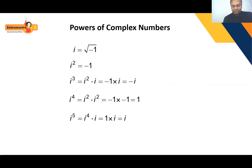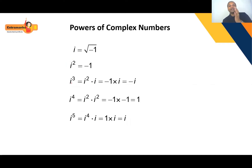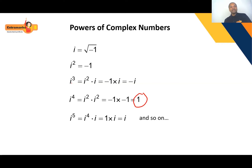Now, starting from i² = -1, multiply both sides by i: i³ = -i. Next, i⁴ = i² × i² = (-1)(-1) = +1. Then i⁵ = i⁴ × i = 1 × i = i. And so on — using these relations we can simplify any power of i, such as i⁵, i⁶, and so forth.